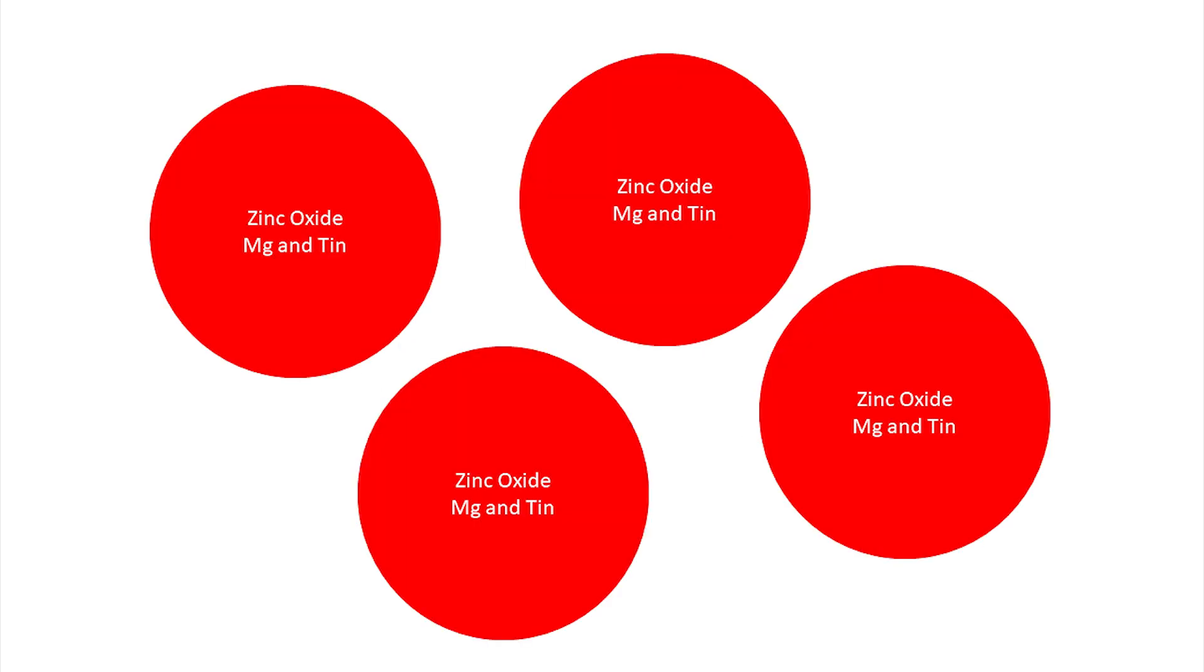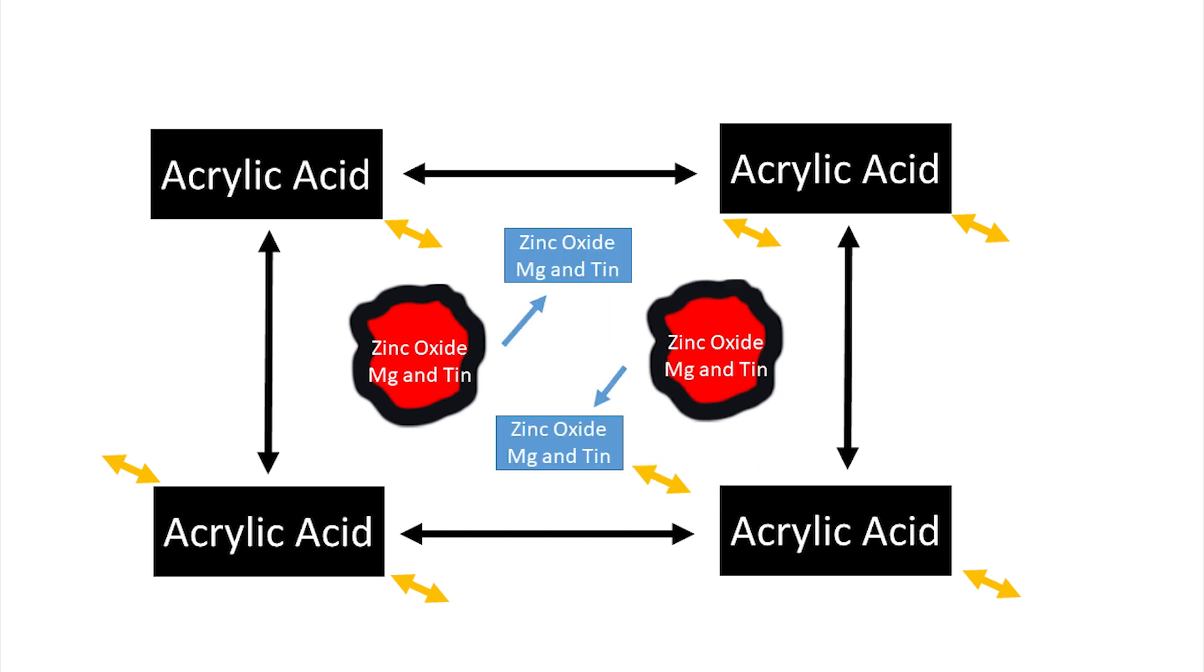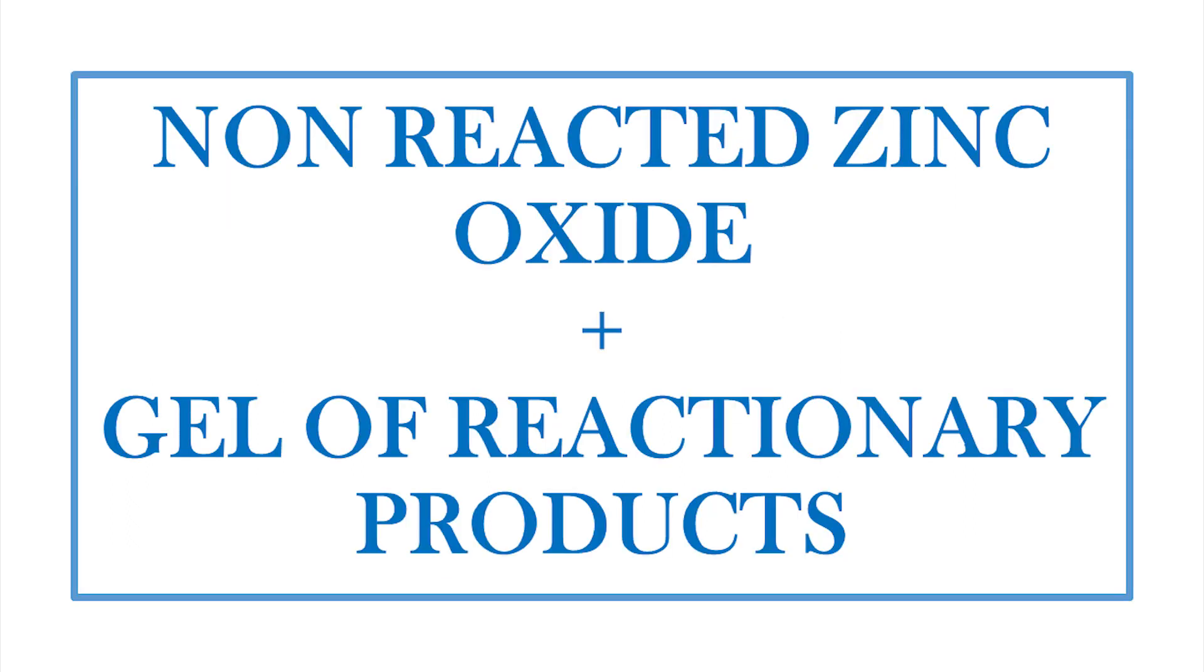Once you have understood this, we basically know that the powder is also made up of zinc oxide, magnesium, and tin. When you mix the powder with the liquid, the acrylic acid will attack the powder particles and try to dissolve it. When this happens, the zinc, magnesium, and tin ions will get released into the matrix, but these ions will then bind to this free carboxylic group. The final structure is basically the various combinations between the ions and the unreacted powder and the acrylic acid.